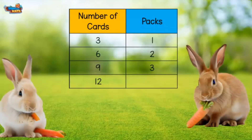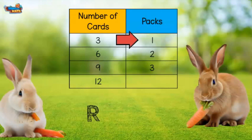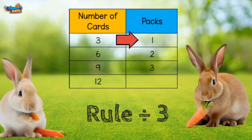Here's a table representing a pattern. In this table we are reading from left to right. The rule is to divide by 3. To find the missing number we continue the pattern by dividing 12 by 3. This equals 4.